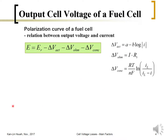With this in mind, the actual cell output voltage equals the equilibrium potential (at zero current) minus the activation overpotential loss, the ohmic voltage loss, and the concentration overvoltage loss. These can be expressed and calculated by the corresponding equations.